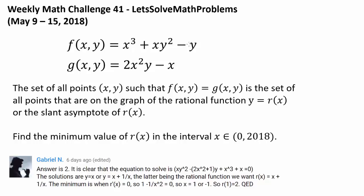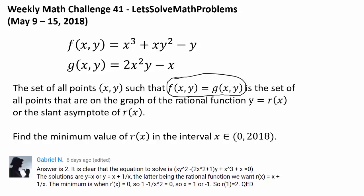We are given f and g, and the set of all points xy such that f is equal to g is the set of all points that are on the graph of the rational function y equals r, or the slant asymptote of r. We wish to find the minimum value of r in the interval 0, 2018. So we want to start by setting up this equality that f is equal to g.